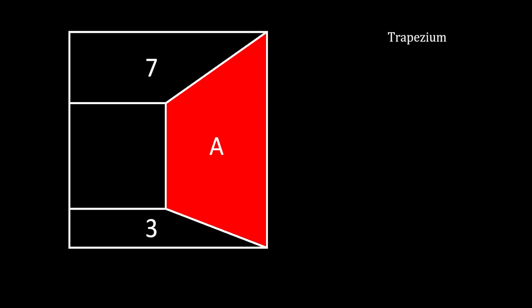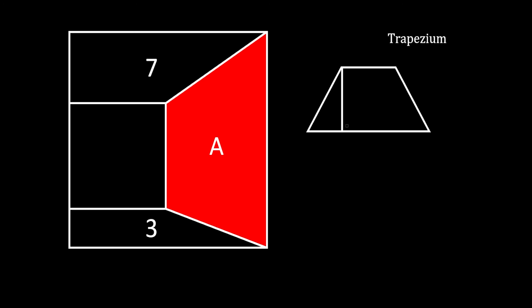We will notice that this red area actually represents a trapezium. Let's remind ourselves that if we have a trapezium with bases a and b and height h, the area of the trapezium will be equal to half of the sum of the bases times the height.